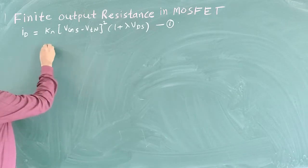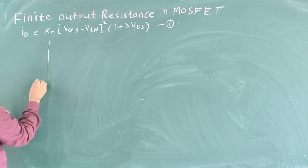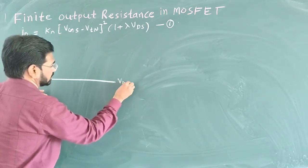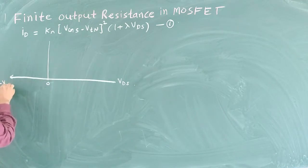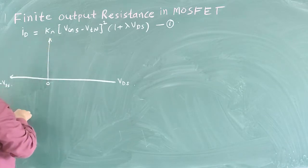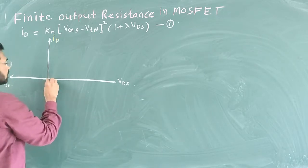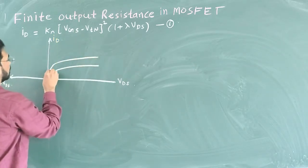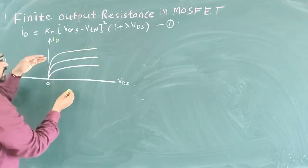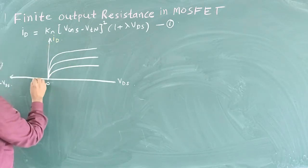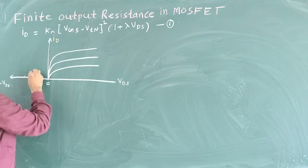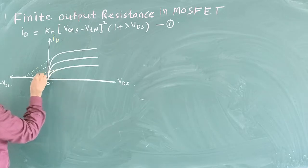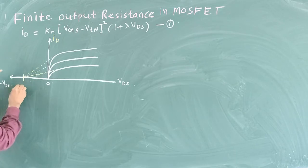I am going to draw the VI characteristic of MOSFET again, this time extending the VDS axis to the left side of zero. So we have minus VDS on the left and ID on the vertical axis. We draw the characteristics with a somewhat positive slope. If we extrapolate or extend these characteristics to the left side, we get lines that converge, and the point where they meet is marked as VA — so it is minus VA on the axis.